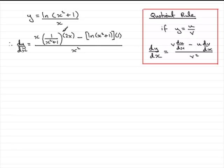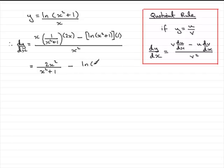Now we need to tidy this up. Looking at the first term: x times 1 times 2x gives 2x squared, all over x squared plus 1. For the next term, 1 times the natural log of x squared plus 1 gives minus the natural log of x squared plus 1. All of this is over x squared.